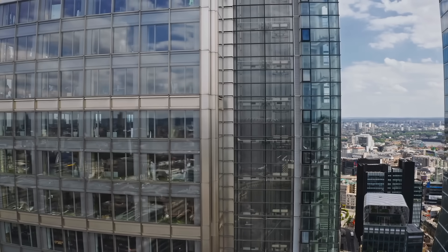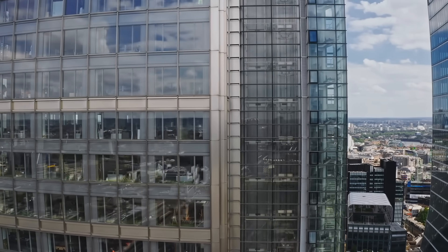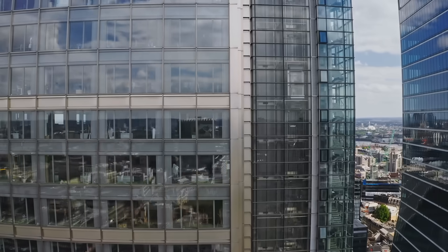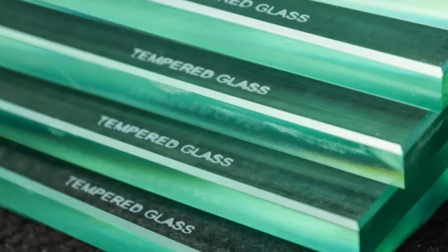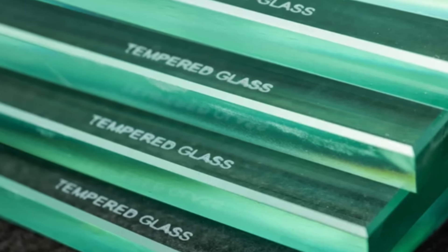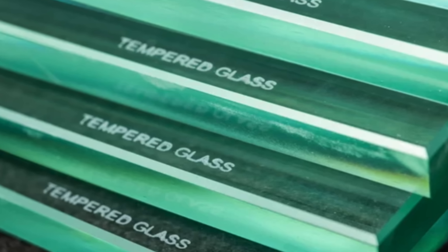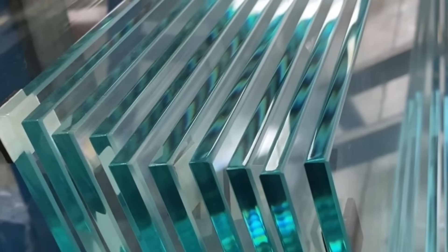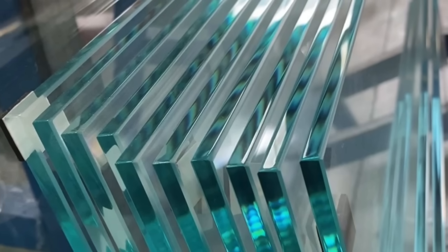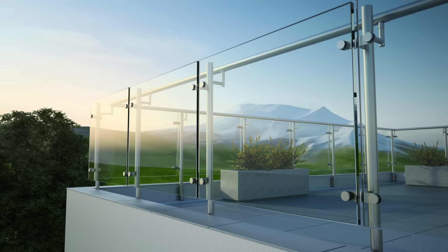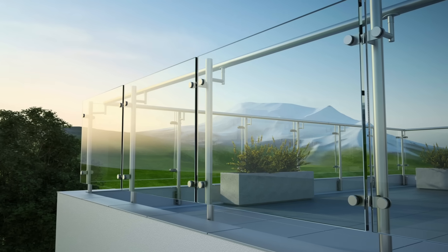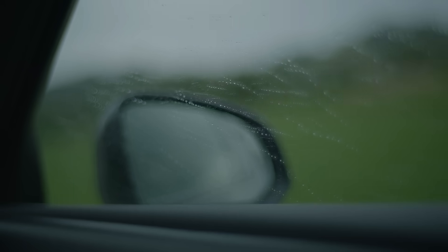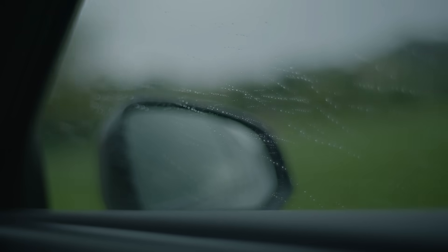As we conclude, tempered glass is just one of many types available, each with its own unique properties and applications. While tempered glass is known for its strength and safety, other types such as laminated, heat-strengthened, and bullet-resistant offer different benefits depending on the needs of the application. Understanding the differences between these types is essential for making informed decisions about which material is best suited for a given project.